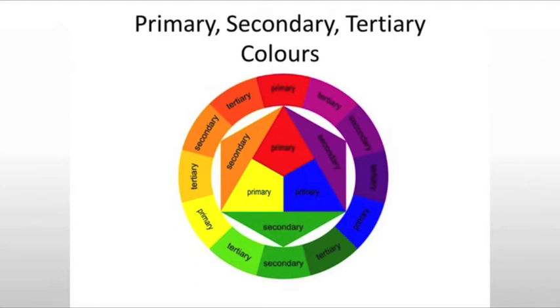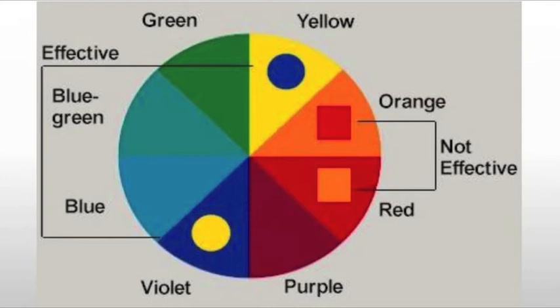But we do use primary and secondary colors quite often for something else. Oftentimes, you'll find colors that are across from each other on the color wheel. These are known as complementary or contrasting colors. And here we see yellow on violet and violet on yellow. And you notice those colors stand out.